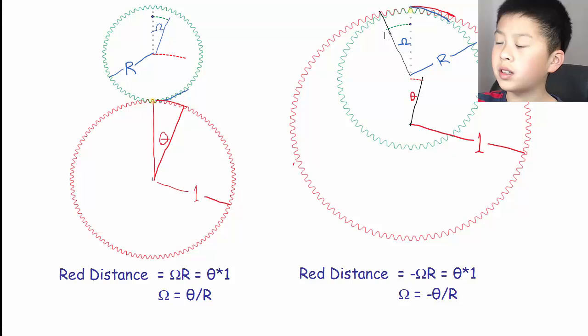This is what it will be like when the green disc is inside the red disc. It will be quite similar, but here if it rotates counterclockwise, the center of the green disc will orbit clockwise. So here it would be minus omega times r is equal to theta times one. So omega would be equal to minus theta over r.